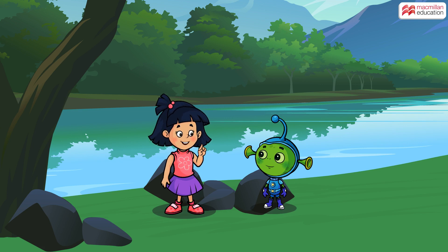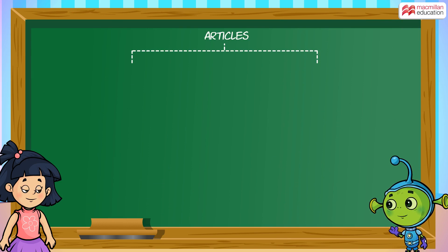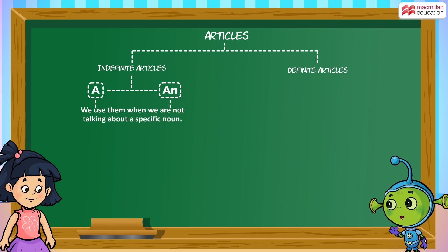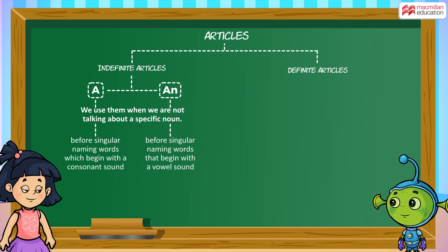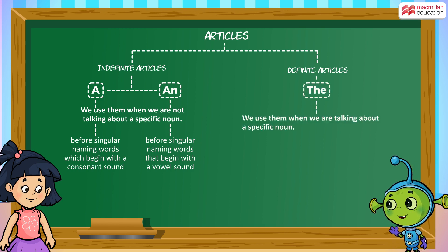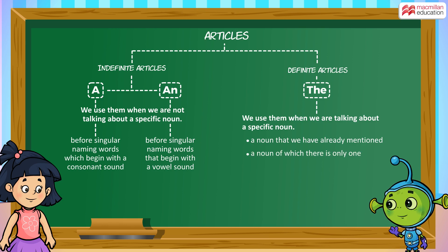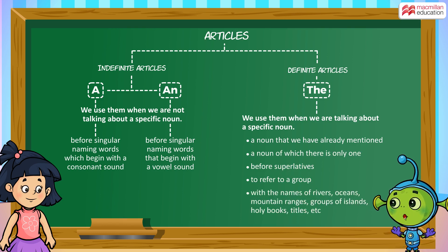Now you will get the hang of how to use articles. Today I learned that articles are of two types: indefinite and definite articles. A and AN are indefinite articles; we use them when we are not talking about a specific noun. A is used before singular naming words which begin with a consonant sound. AN is used before singular naming words that begin with a vowel sound. The definite article THE is used to talk about a specific noun, a noun that we have already mentioned, a noun of which there is only one, before superlatives, to refer to a group, and with the names of rivers, oceans, mountain ranges, groups of islands, holy books, titles, etc.